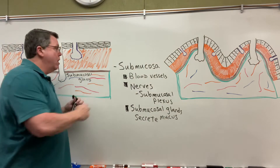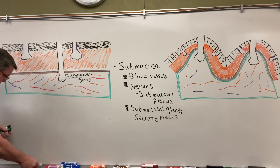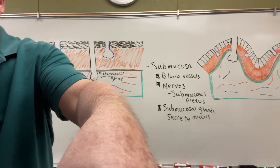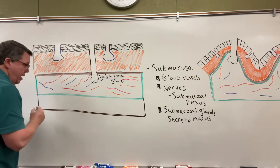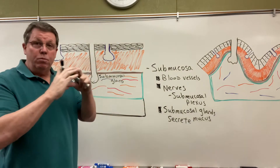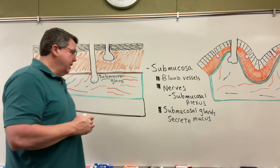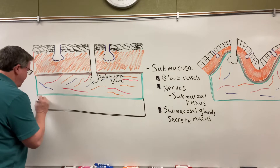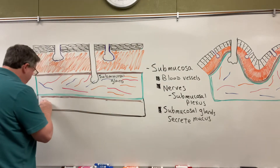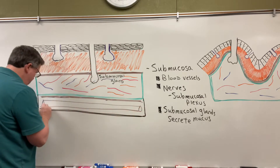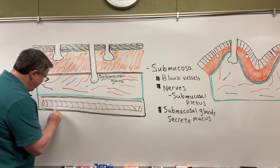Just like we had the muscularis mucosae, underneath we're going to have the muscularis externa, which is another layer of muscles. This layer is going to have what we call the longitudinal muscle, which is a long tube-like muscle. Then we're going to have nerves called the myenteric plexus. And on the innermost part we have the circular muscle. Remember you're looking at this as a two-dimensional object, so I'll draw my longitudinal muscle and my circular muscle with lines.